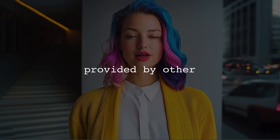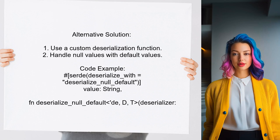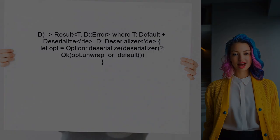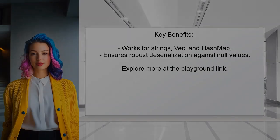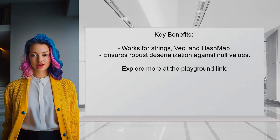Now let's look at answers provided by other users. An alternative solution involves using a custom deserialization function. This function allows you to handle null values by providing default values during deserialization. This method works not only for strings, but also for other types like vectors and hash maps, ensuring that your deserialization process is robust against null values.